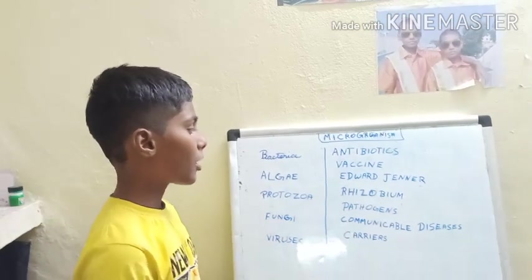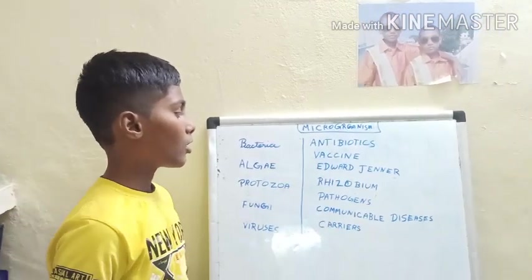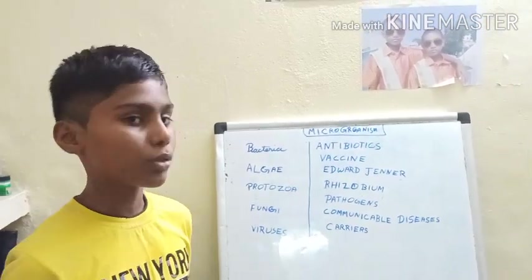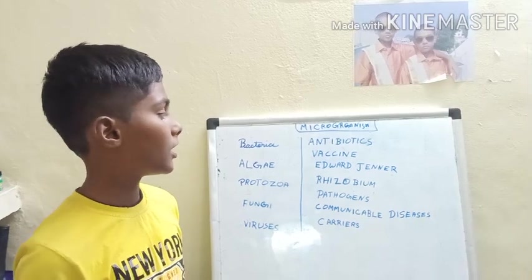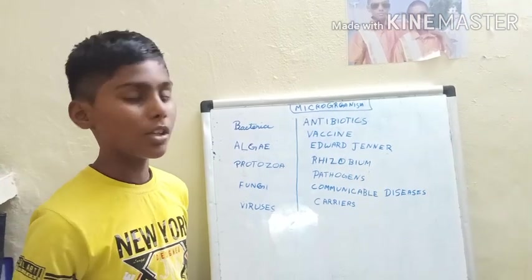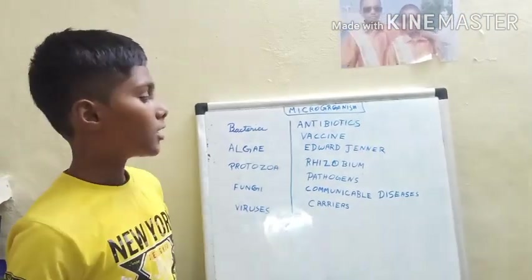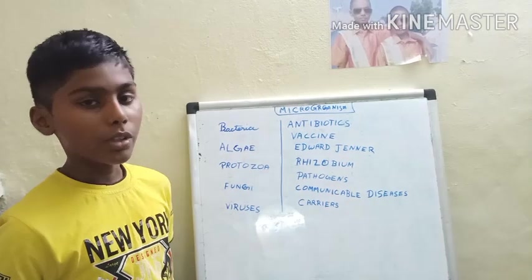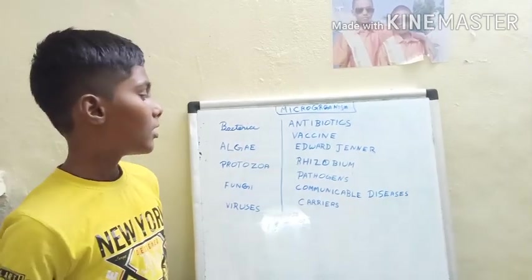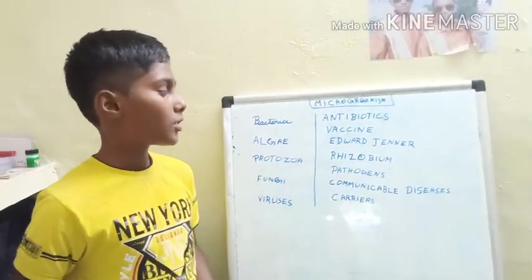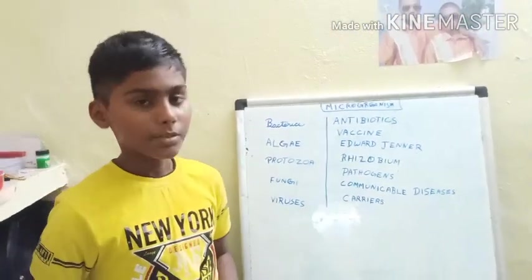Antibiotics are also given as vaccines to people for diseases like polio and smallpox. Edward Jenner is the person who invented the vaccine for smallpox.